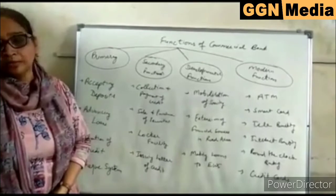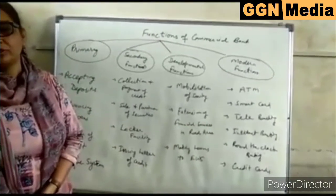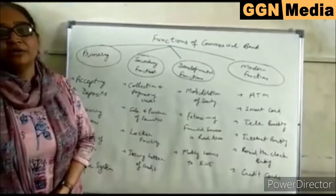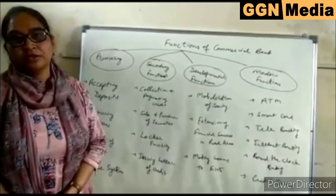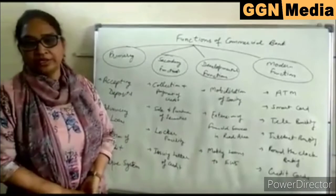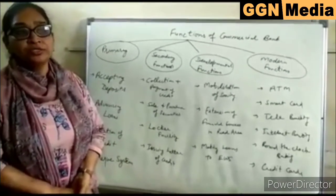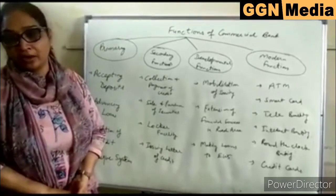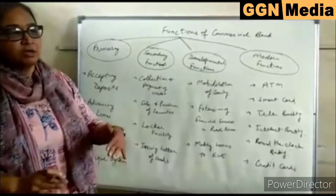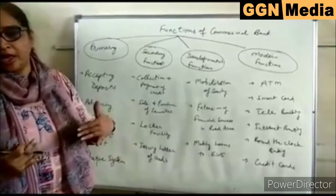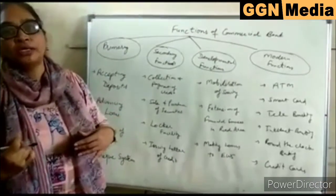Money at call is a very short-term loan which is given from one day to 14 days to banks or other financial institutions. Overdraft is an amount given to the borrower who holds a current account in the bank — it is an excess amount you can withdraw from your deposit, and interest is charged on the overdraft amount. It is a very short-term loan.